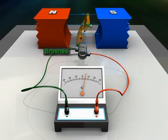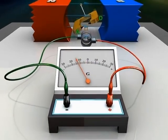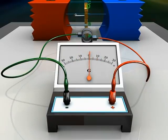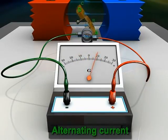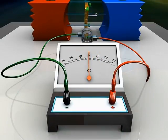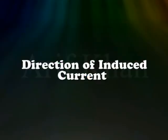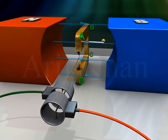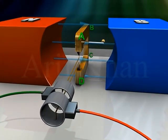The current flows through the slip rings and the brushes. Note that the galvanometer needle swings between the negative and positive values — this means that an alternating current is flowing through the galvanometer. Direction of induced current: initially the armature ABCD is vertical with its arm AB up and CD down.